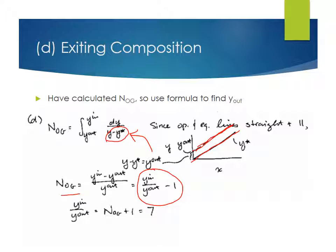So Y in over Y out is the number of transfer units, which we know from part C to be six plus one. So Y in over Y out equals seven. And so Y out is just one seventh of Y going into this column. So that is 0.00286 is the mole fraction leaving.